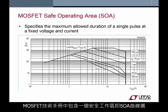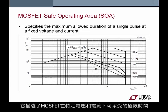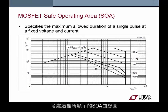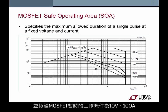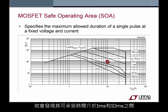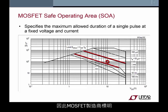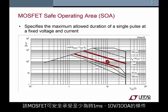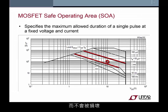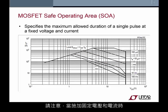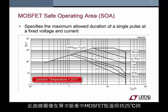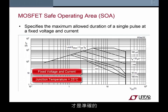MOSFET datasheets contain a safe operating area, or SOA plot, that describes the maximum time a MOSFET can be exposed to a specific voltage and current. Consider the SOA plot shown here, and assume the MOSFET will be subjected to a temporary 10 volt 100 amp condition. The allowable time falls between the 1 millisecond and 10 millisecond lines, so you can safely apply this condition for at least 1 millisecond. Note that this plot is only accurate when the MOSFET case temperature is held at 25 degrees Celsius and a single pulse with a fixed voltage and current is applied.